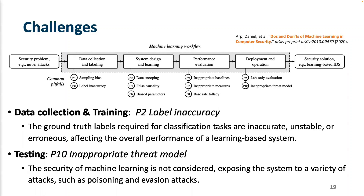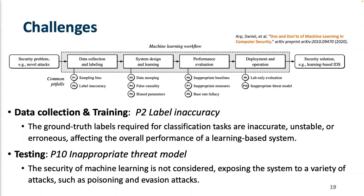This paper discusses 10 common pitfalls, from P1 to P10. I want to highlight two. Pitfall P2 is about data collection and training — ground truth labels required for classification tasks are often inaccurate, unstable, or missing. For network traffic data, you might have some labeled traffic samples tagged as DDoS attacks, but most traffic data is unlabeled. Pitfall P10 is an 'inappropriate threat model' — meaning the security of your machine learning model itself is not considered, which exposes the system to attacks such as poisoning and adversarial attacks.